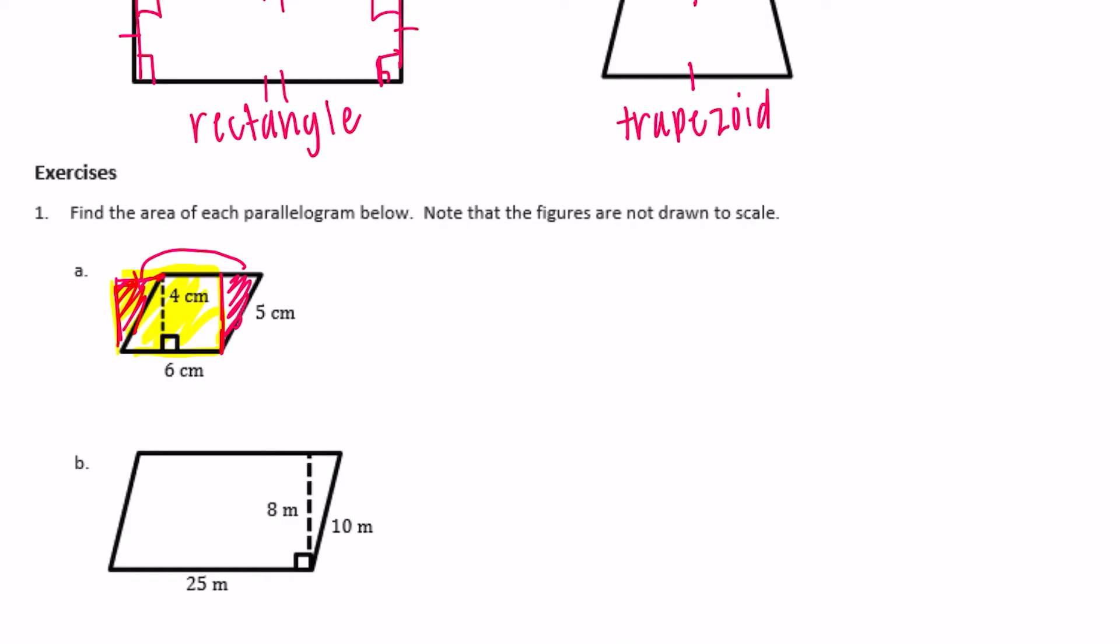To find the area of any parallelogram, all we have to do is use the same equation that we use for finding the area of a rectangle. So base times height equals area. The base here is six, and now here's where we have to be careful. The height here is not five because that is going at an angle. We need to go straight from here to the top, so it needs to be vertical. The height here is actually four, so six times four would be equal to 24 centimeters squared.